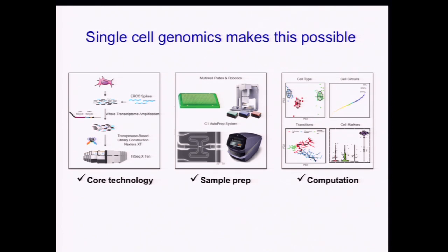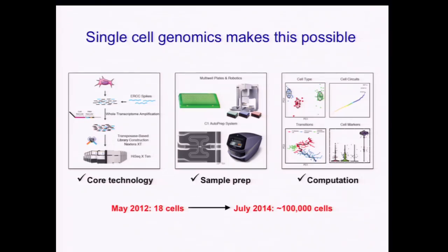As a result, even though single-cell genomics is very young, it's already taking off very quickly across the broadest scientific community. Just based on numbers from the Broad, where I'm at, if in May 2012 we had 18 cells profiled, by now we have profiled about 100,000 cells.